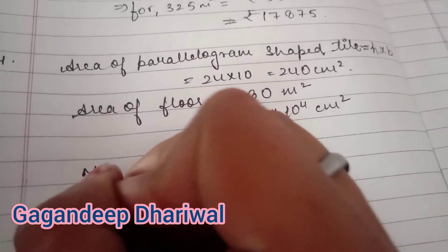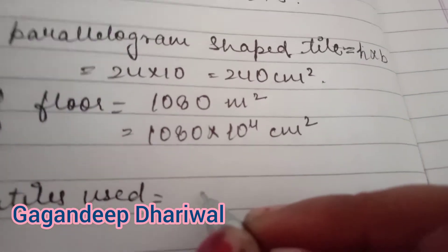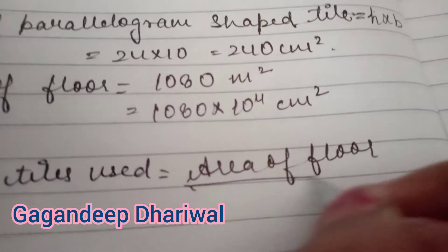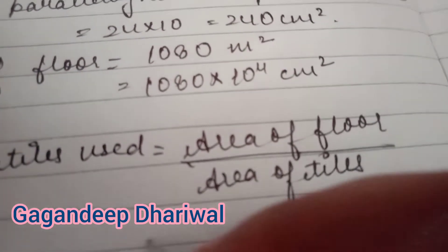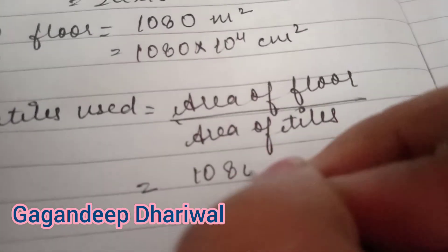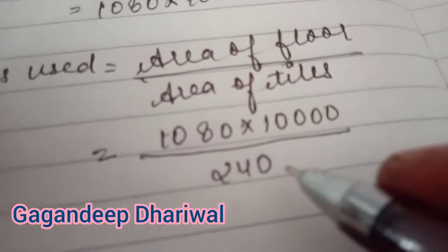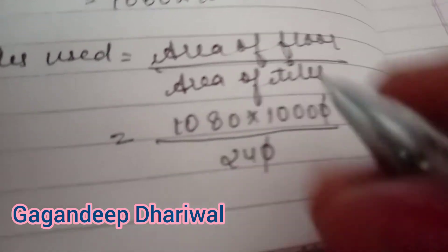To find the number of tiles, we divide: number of tiles = area of floor ÷ area of parallelogram-shaped tile. So that is 1080 × 10⁴ divided by 240. Cancelling the zeros, we need to divide these values.